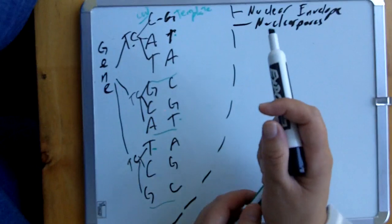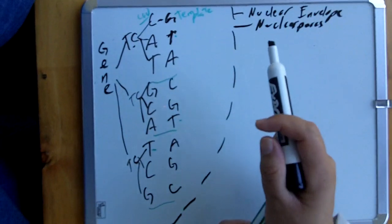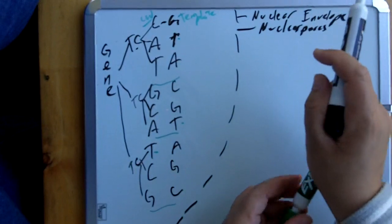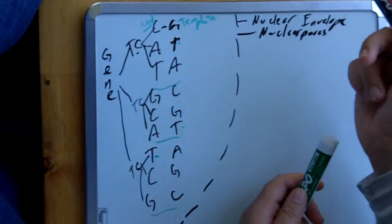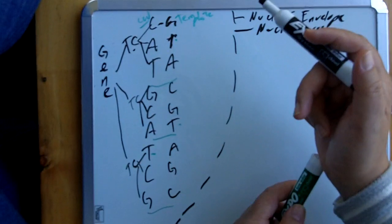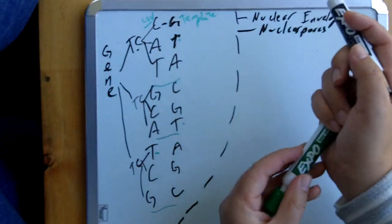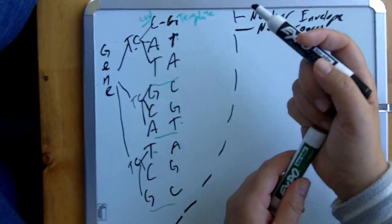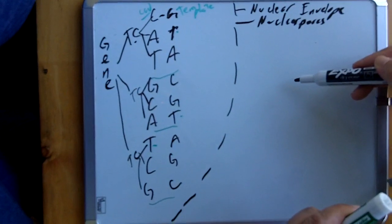If you get a question on an exam asking whether the nucleus is an organelle, the answer is yes — it performs a function, and an organelle is something that performs a function in the cell. You may also get a question about whether DNA can leave the nucleus — and the answer is no. We're talking about our cells, so the DNA is never going to go outside. Never.